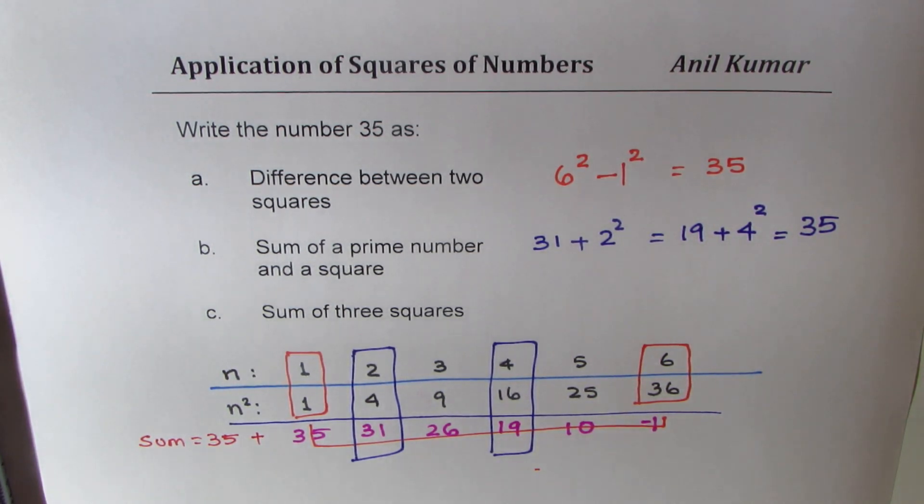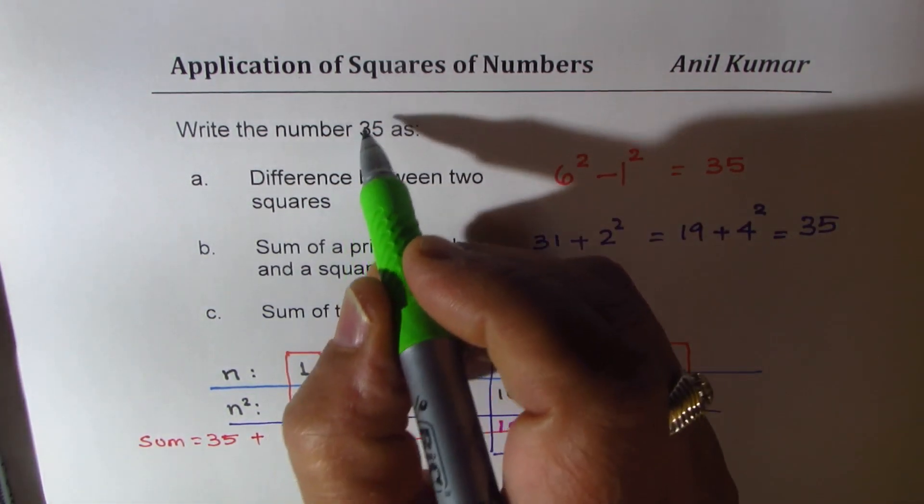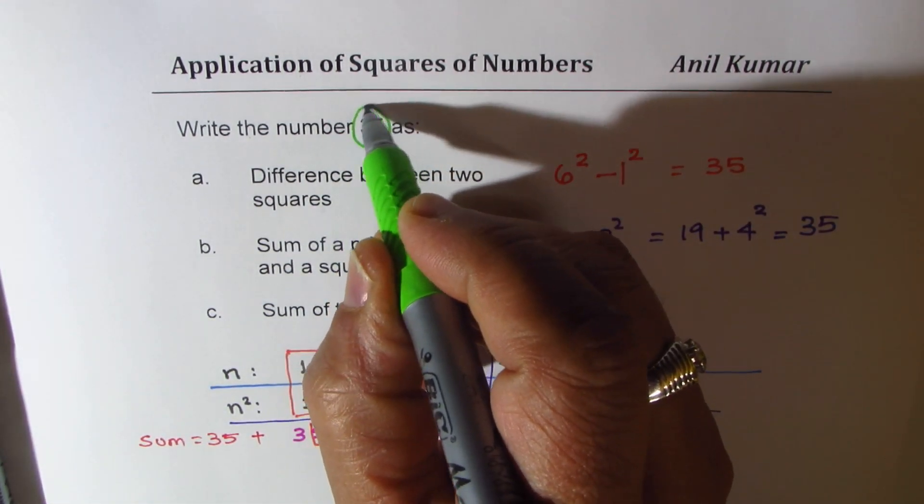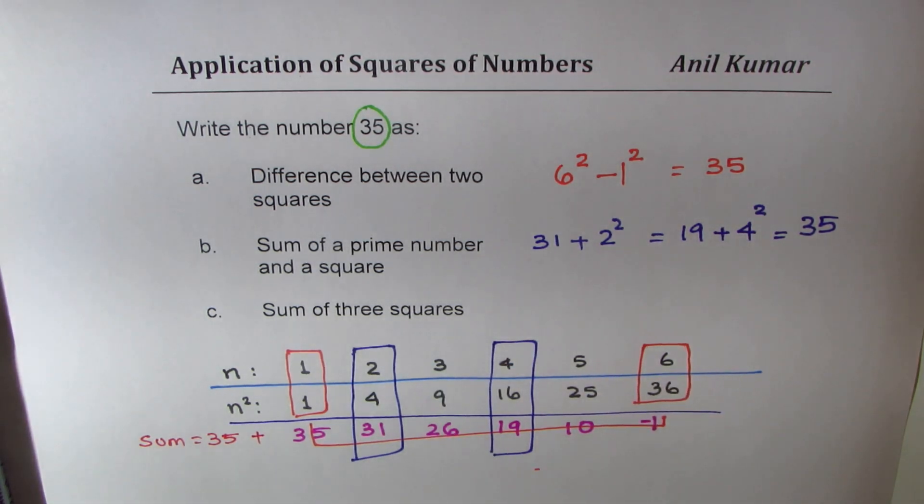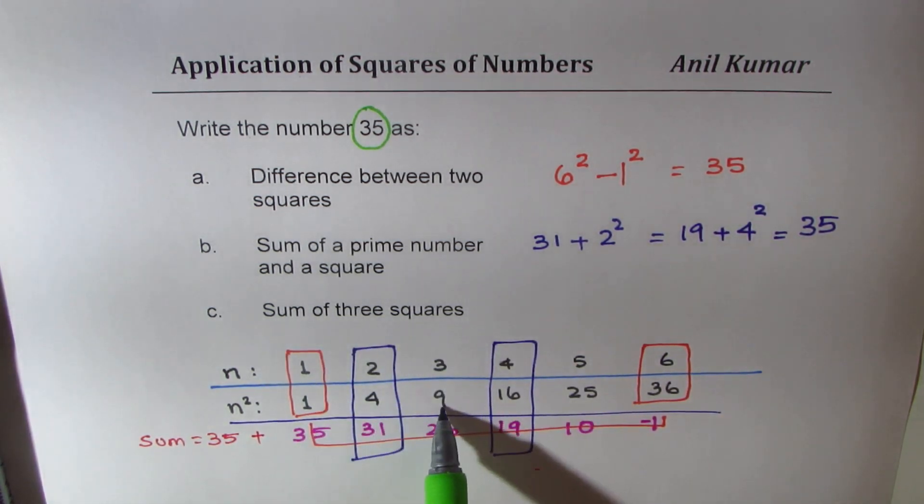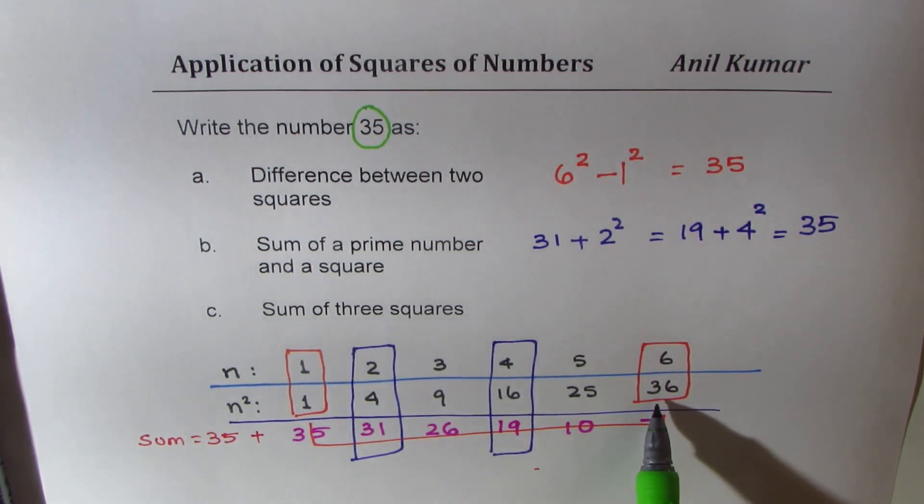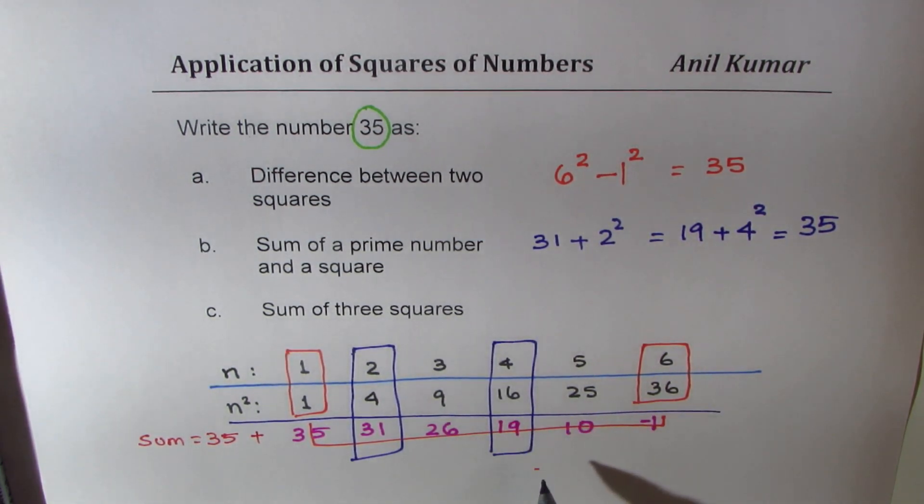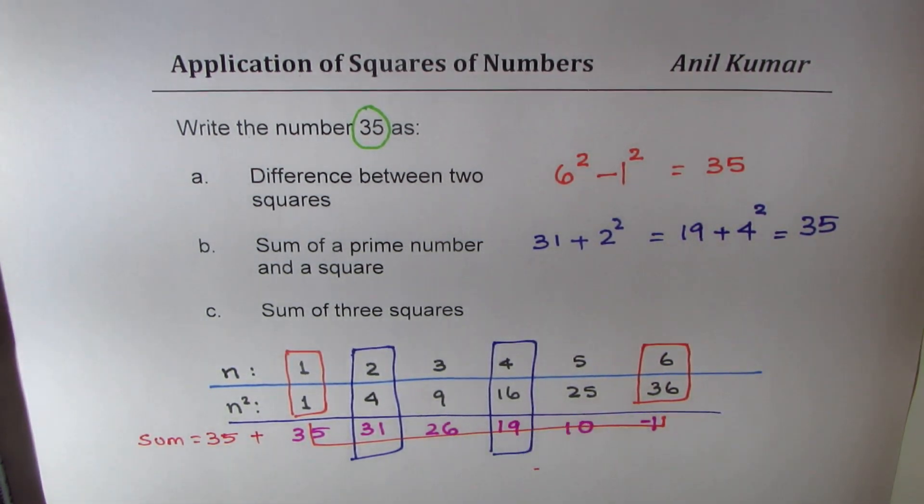Now, let's look into the third one, which is sum of three squares. We need to combine three of them to get 35. So, 35 is a key number. Which three can be combined square? Look into these, which can work for you.